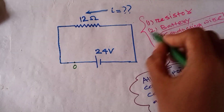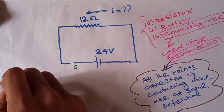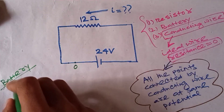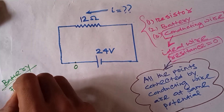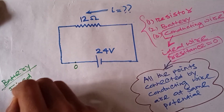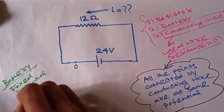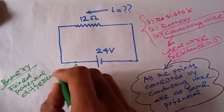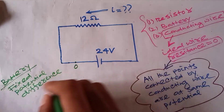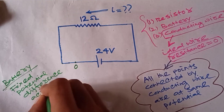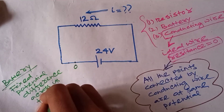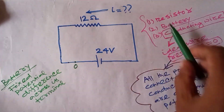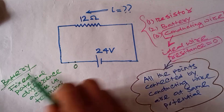Next, let's look at the battery concept. What does a battery do? A battery is a device that maintains a fixed potential difference across its terminals. You have to keep in mind that it always maintains a fixed potential difference. We can use this concept to solve any complicated electrical circuit.